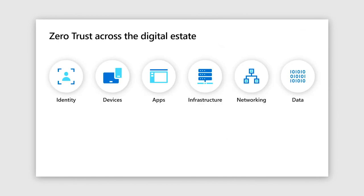Let's do a conceptual breakdown of the impact that the zero trust approach would have across a company's digital estate. There are six elements: identities, apps, devices, infrastructure, and data. In a zero trust approach, identities should be given the least privileged access to a resource — trust should not be overextended. Devices and apps should be monitored using analytics to ensure they meet a standard of health. All data should be classified, encrypted, and access to it should be limited.